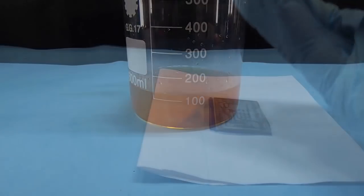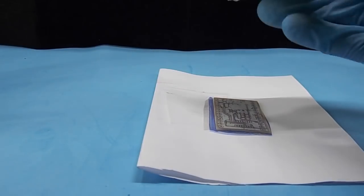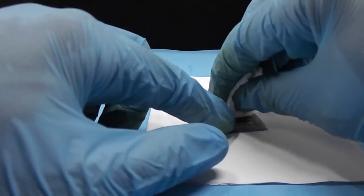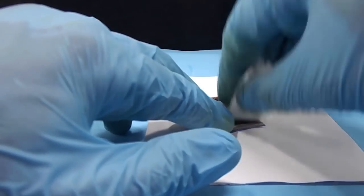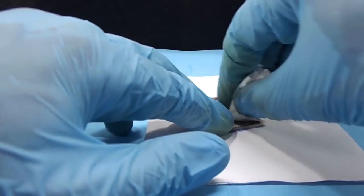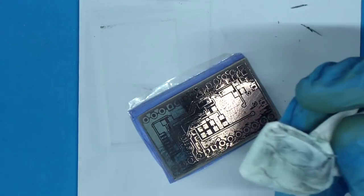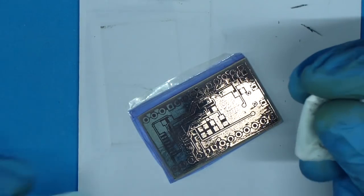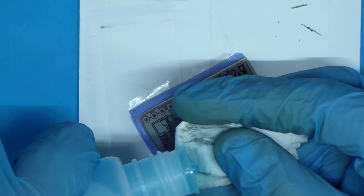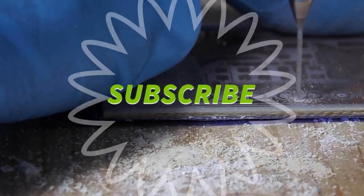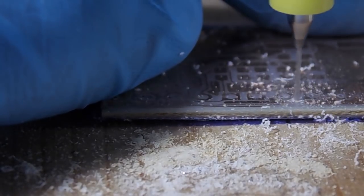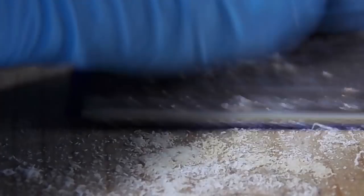Now the board is etched. Wipe with acetone to remove the toner and let's work on the other layer. Before we start with the other layer we should drill the board for alignment, so here I'm going to finish all the drilling job and I will back to you.